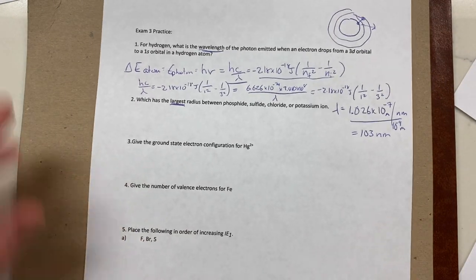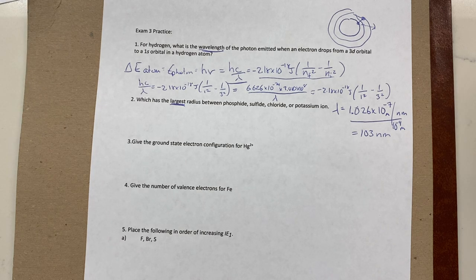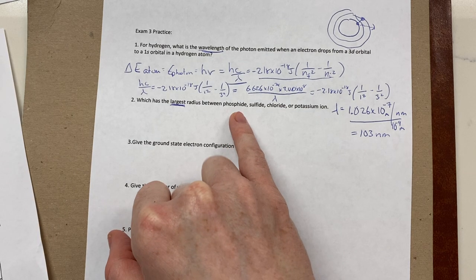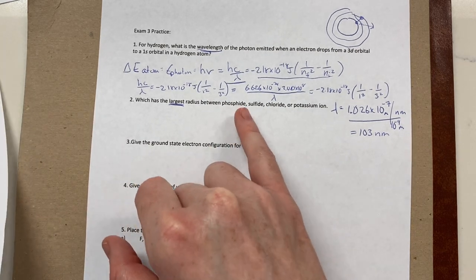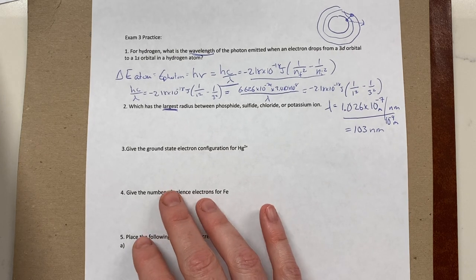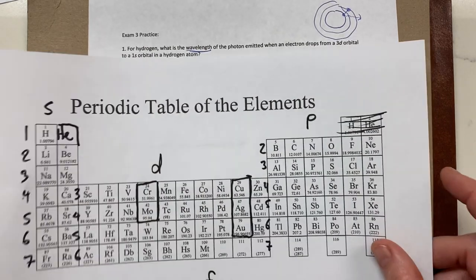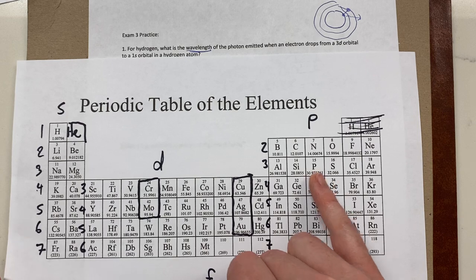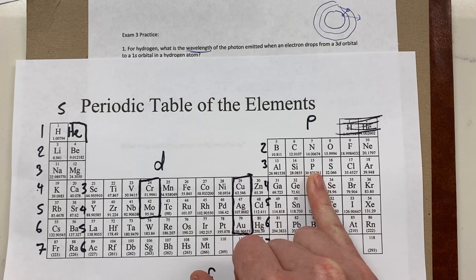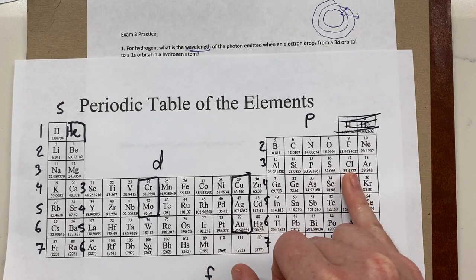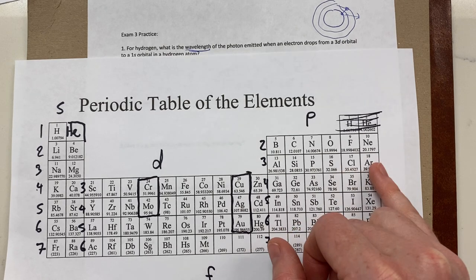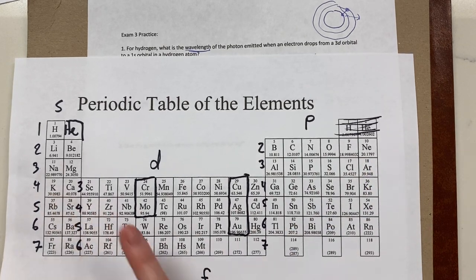The next question asks which has the largest radius among phosphide, sulfide, chloride, and potassium ion. Pay attention to the endings — these are ions. Phosphide has a 3-minus charge, sulfide has 2-minus, chloride has 1-minus, and we skip argon and go to the potassium ion. The general trend of radius increasing down and to the left only applies to neutral atoms, and these are ions.